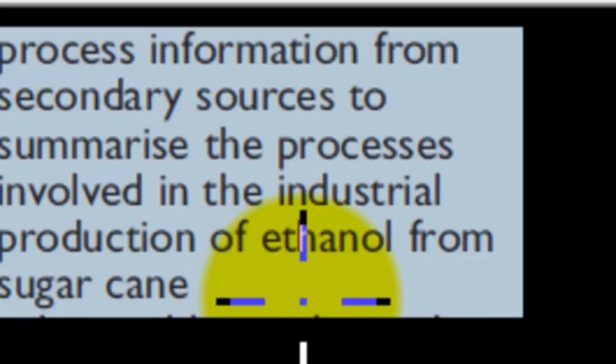Welcome back. In the last video we talked about different ways we can make ethanol, such as using a catalyst like sulfuric acid. In this video we're going to cover a different way to make ethanol, and this is the main way that the industry makes ethanol itself from sugarcane.